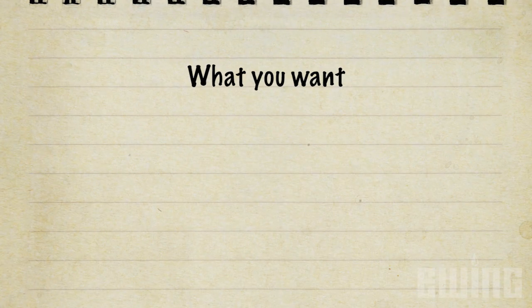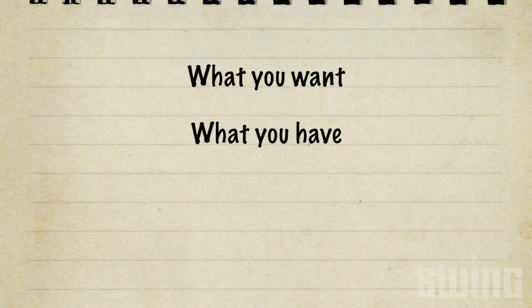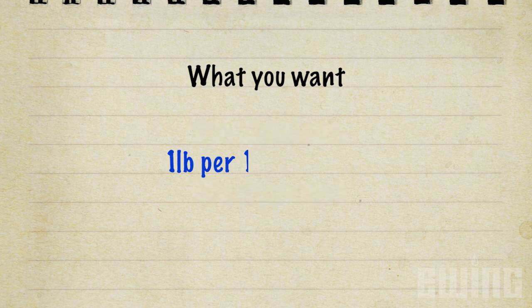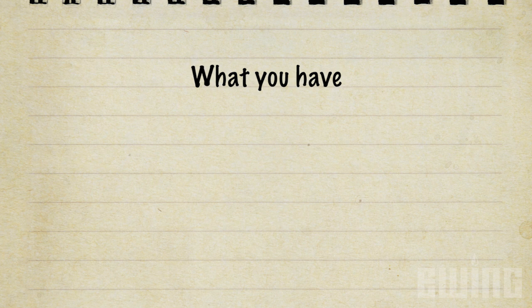An easy way to remember how to calculate the application rate is to use the WHAT method: what you want, what you have, and what you need. What you want is the industry standard nitrogen application rate of one pound per thousand square feet. What you have is the nitrogen content percentage of the fertilizer, indicated by the first of the three big numbers on the label.